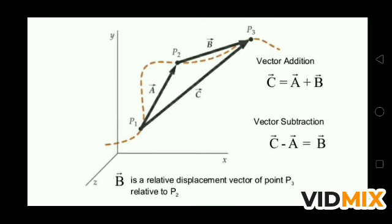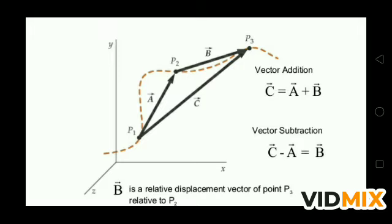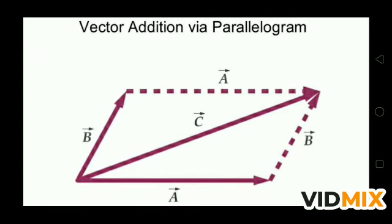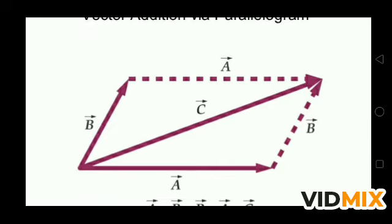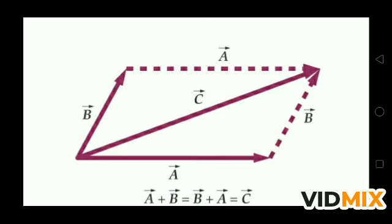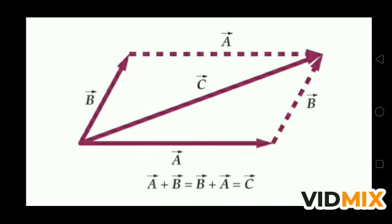Next is vector addition via the parallelogram law. Suppose there are two vectors A and B originating from the same point. If you draw a line parallel to vector B as a dotted line, and draw a dotted line parallel to vector A, then the diagonal of the parallelogram gives the resultant vector C.